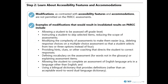Step two tells us some of the things we should not do. Modifications, as contrasted with accessibility features and accommodations, involve changes in the PARCC assessment or in the conditions in which a student takes the assessment that would result in unacceptable changes in what the assessment is designed to measure — for example, reducing or changing expectations for students. Modifications could also provide an unfair advantage to a student. Therefore, modifications are not permitted on the PARCC assessments. You see a non-exhaustive list of modifications that would invalidate results on PARCC. For more information, see pages 51 to 52 of the PARCC manual.